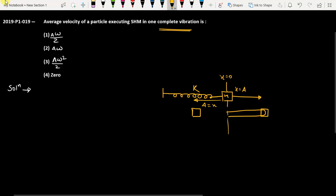To make it complete, the particle will move back to the other extremity and then come back again. Now this is the complete vibration. For the complete vibration, if you talk about displacement, displacement is going to be zero.